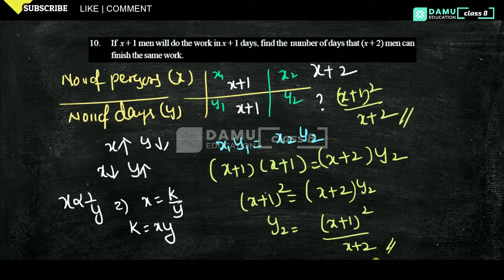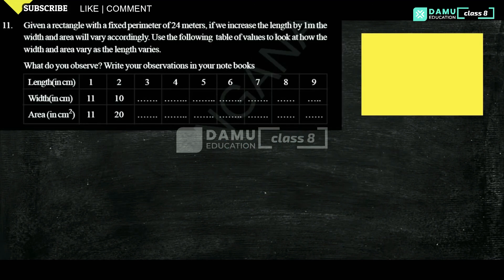Thanks for watching, please subscribe. Hello viewers, thanks for watching our videos. Please subscribe and click the bell icon. In this module we are going to discuss: given a rectangle with a fixed perimeter of 24 meters.